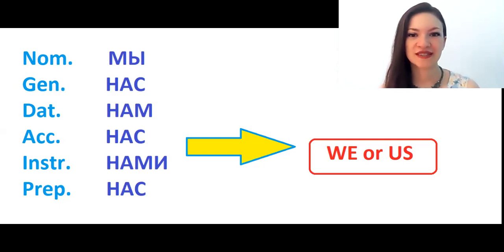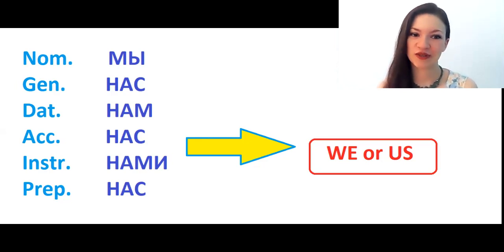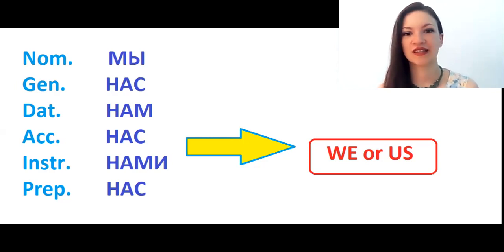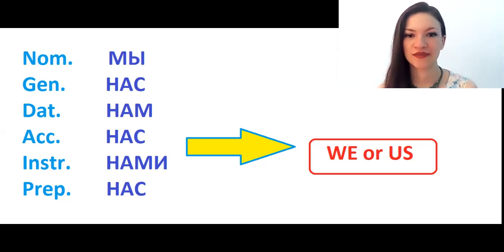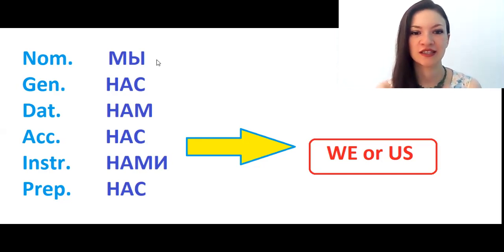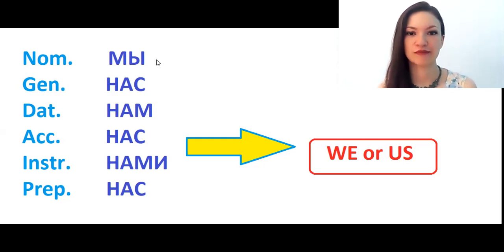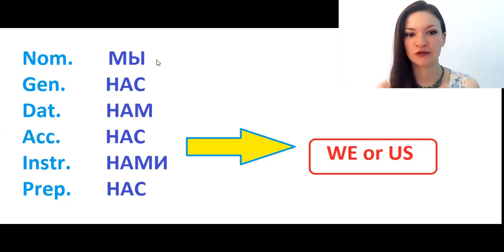And now we start our lesson. As you already know, in Russian language we have six Russian cases. Let's talk about the Russian pronoun мы — in English it means 'we.' The nominative form is мы, and this form you can find in the dictionary, but all the rest forms you will not find in the dictionary.